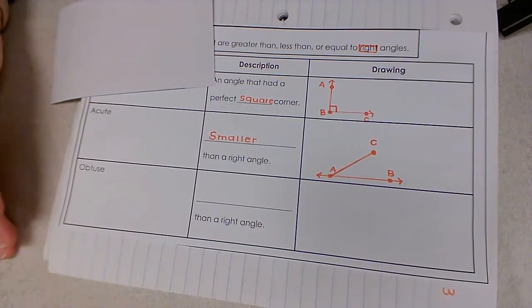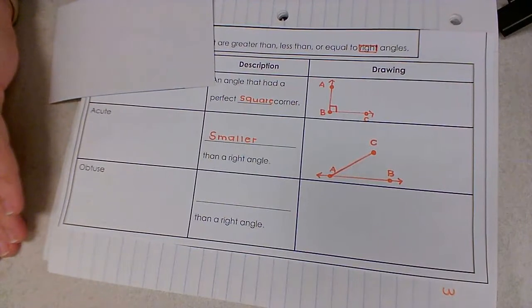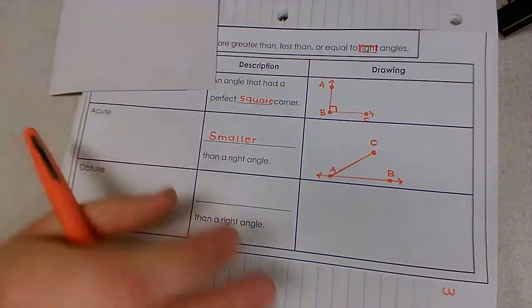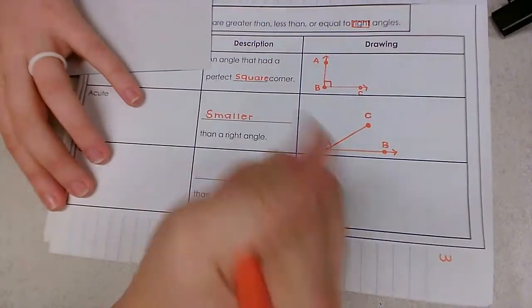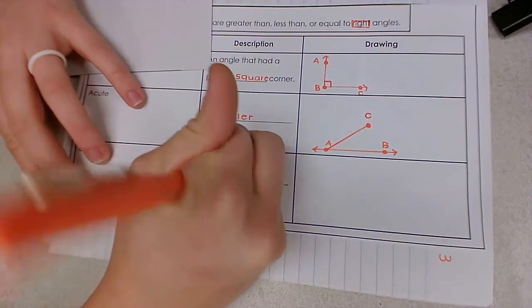So if an acute angle is one that's smaller than a square corner, a right angle, an obtuse angle is one that's larger than a right angle.